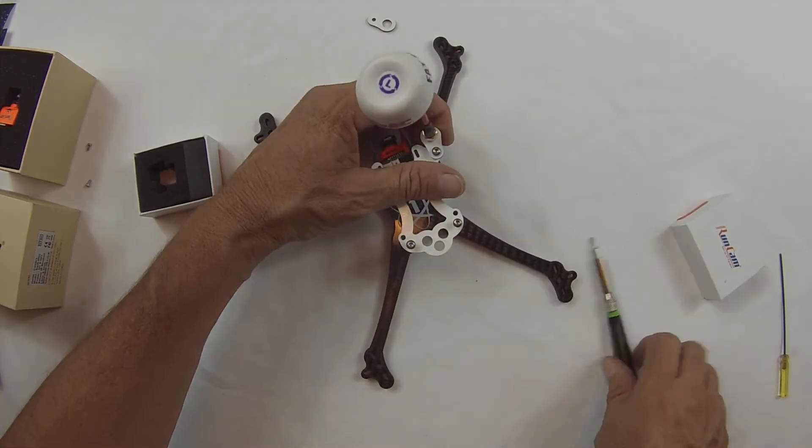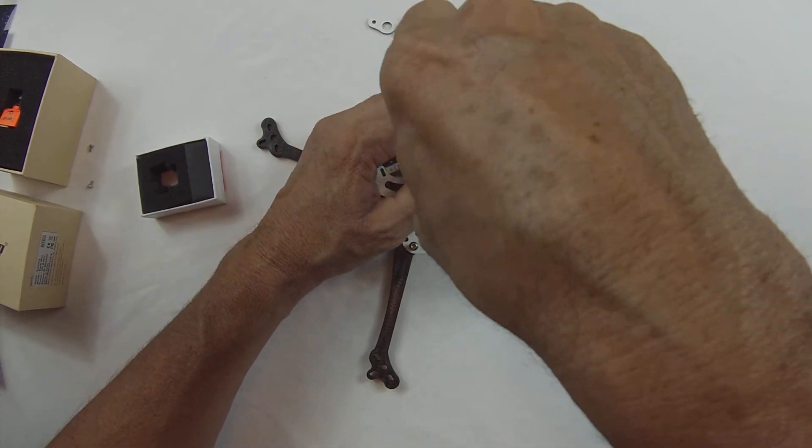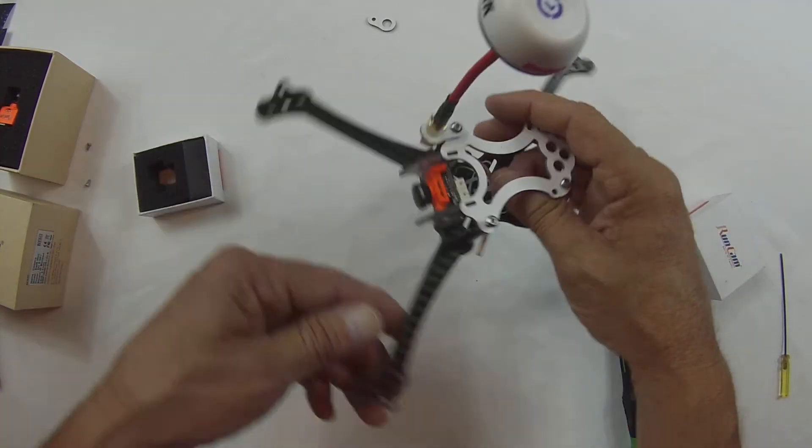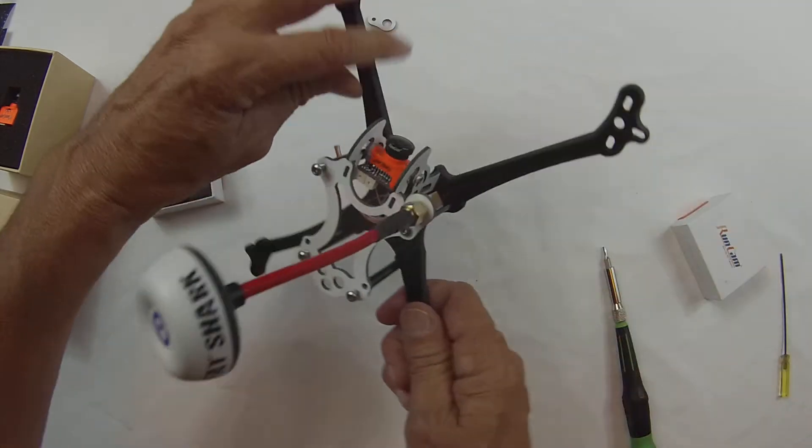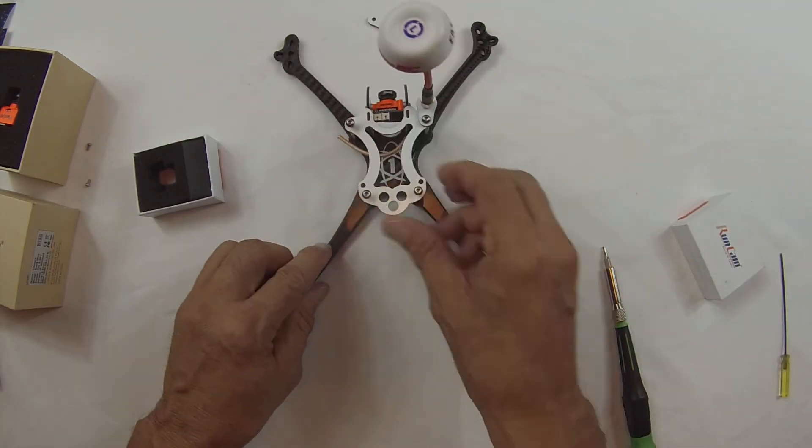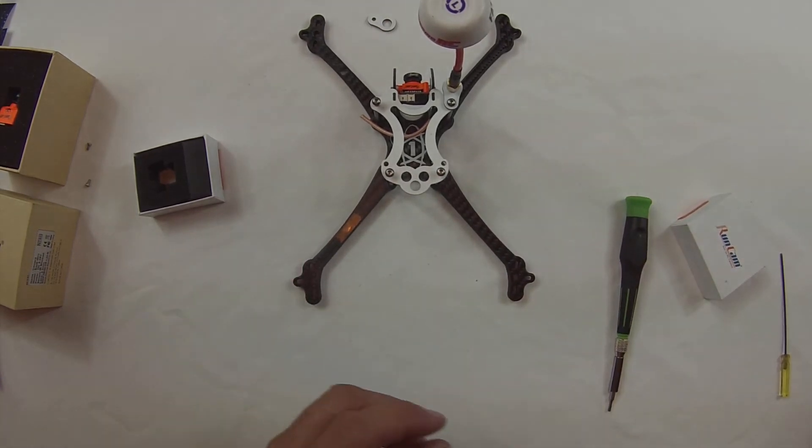Nice. I know some people like to run it forward or you can run it back here. So that's how that bad boy goes. Now these two holes here, that's for your antenna tubing.